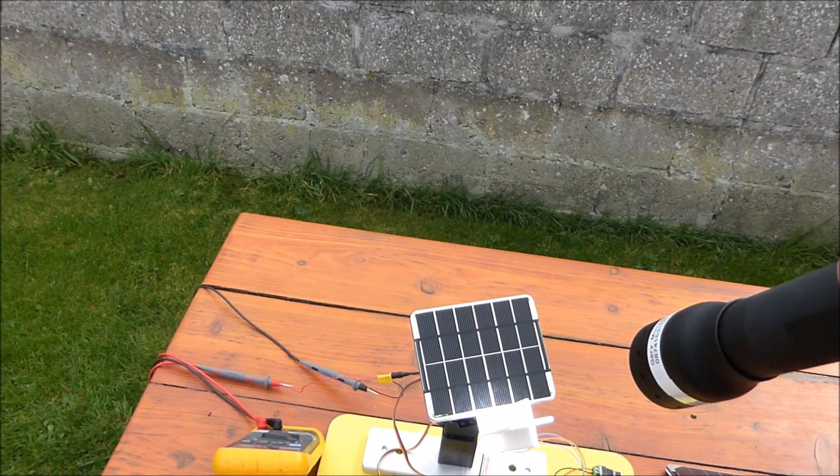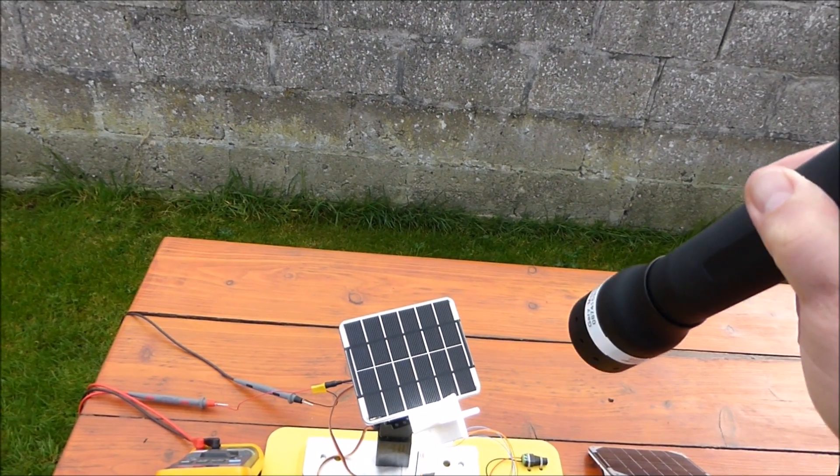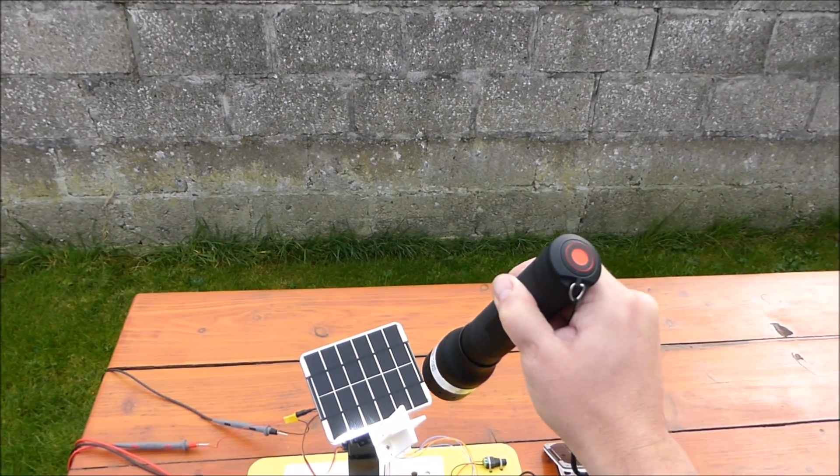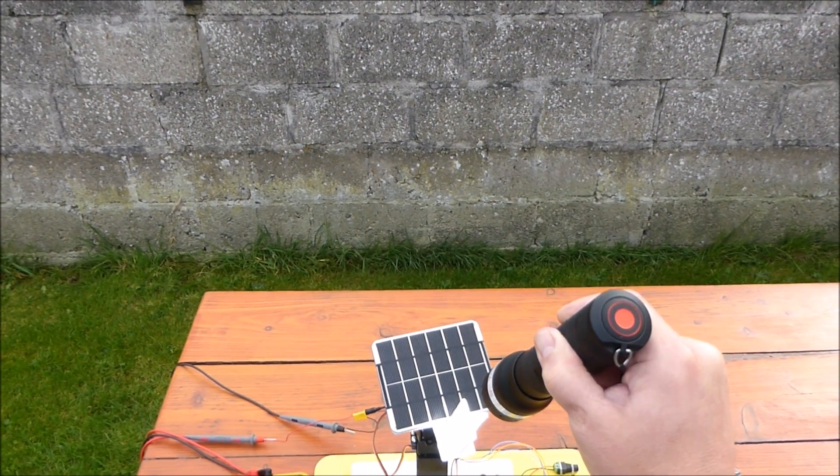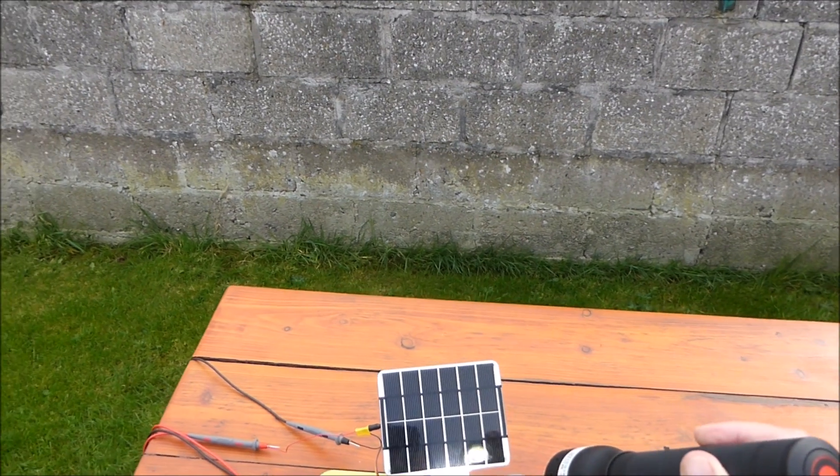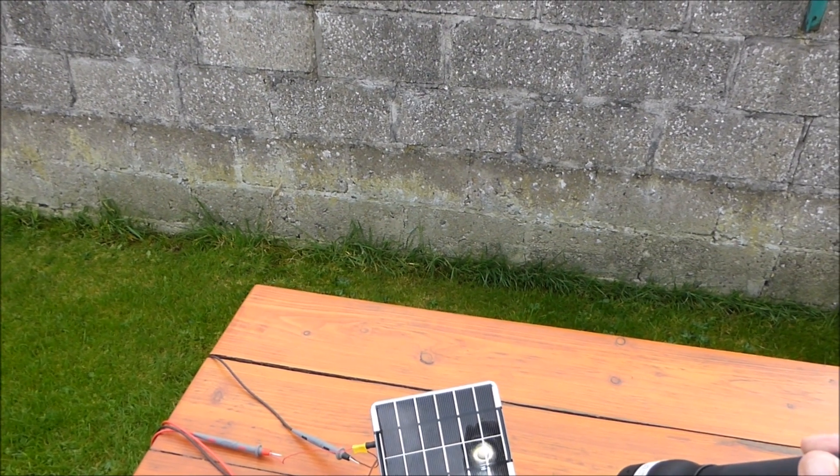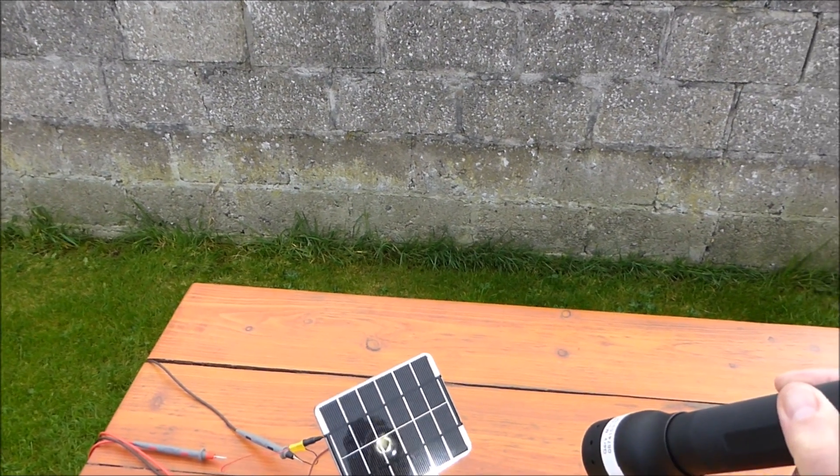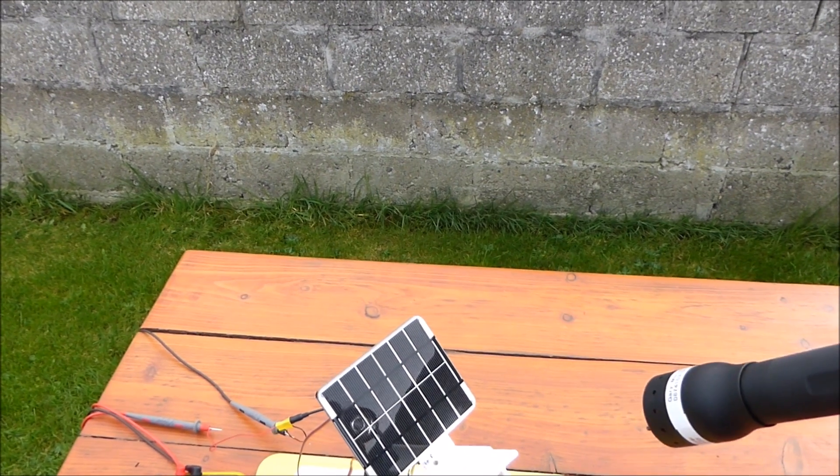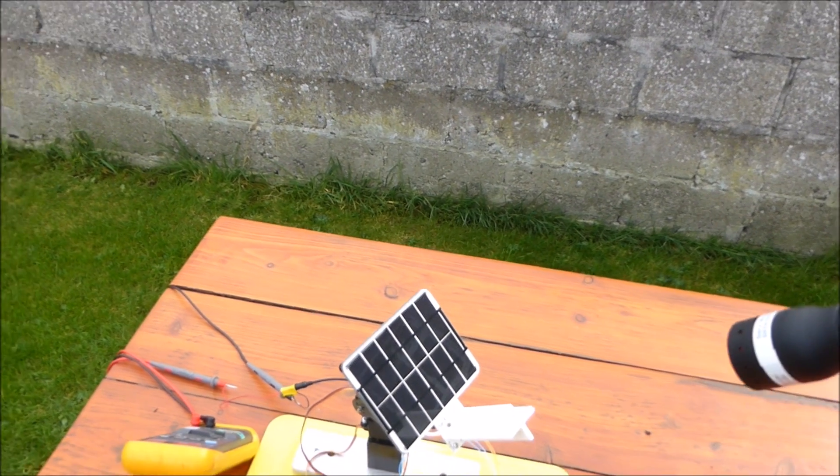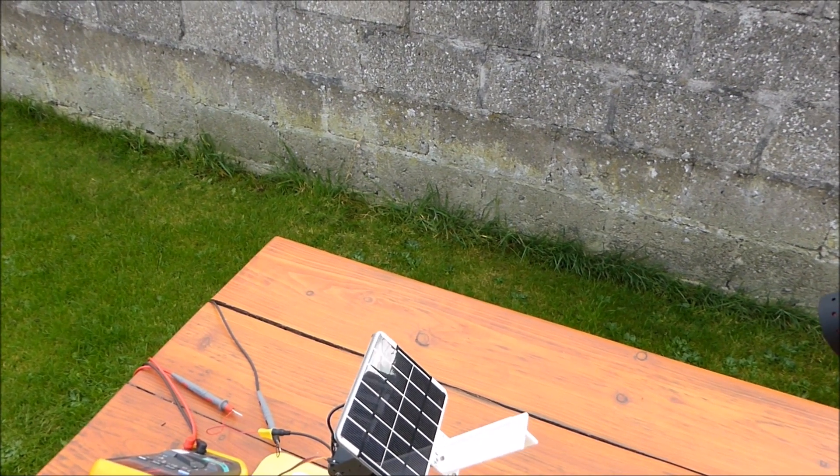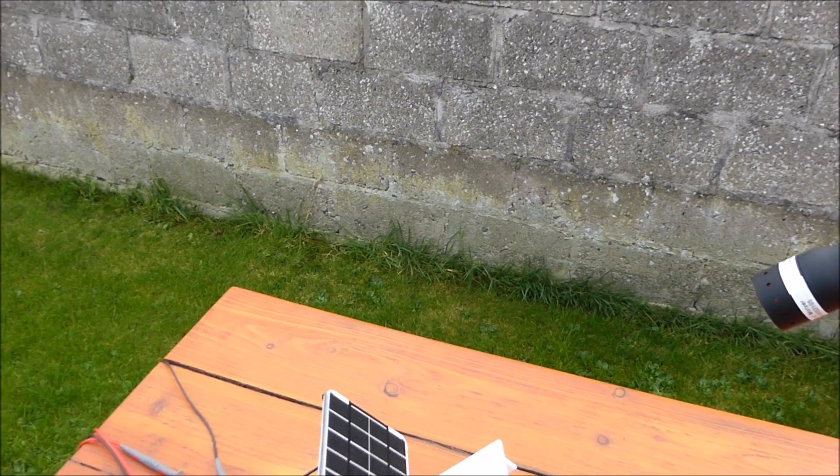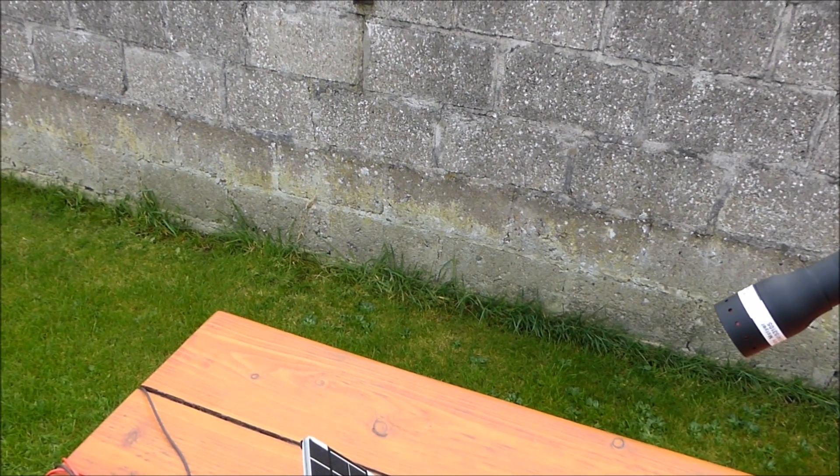By using a torch, we can see that the panel orientates itself to the brightest part of the illumination. In this case, the torch is interfering with the light-dependent resistors and we can see that the panel is following the torchlight. It keeps the panel orientated towards the brightest part of the sky.